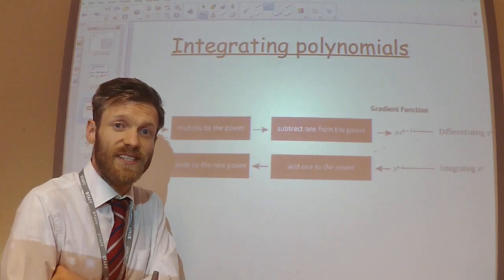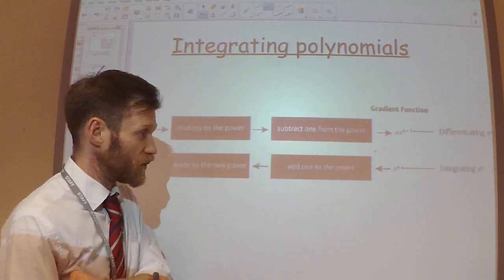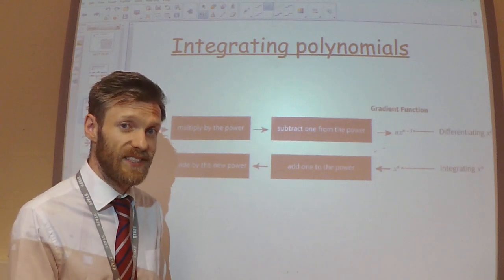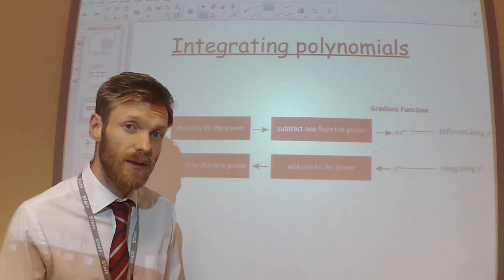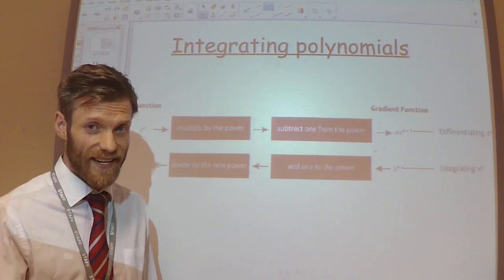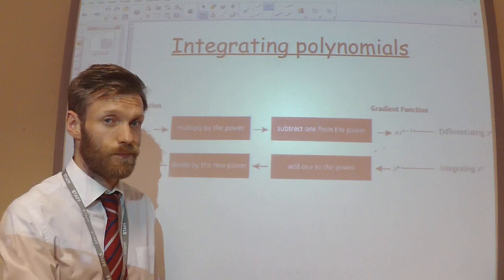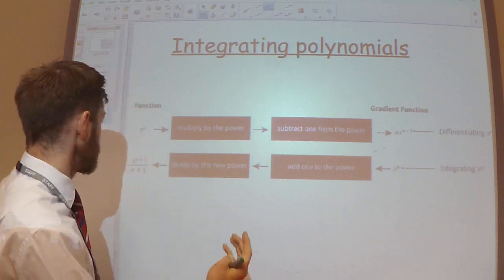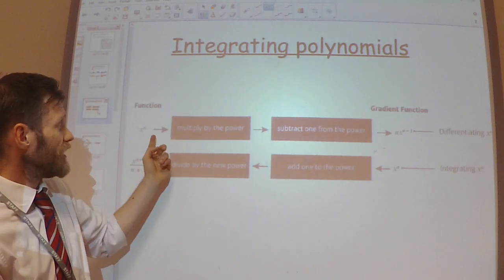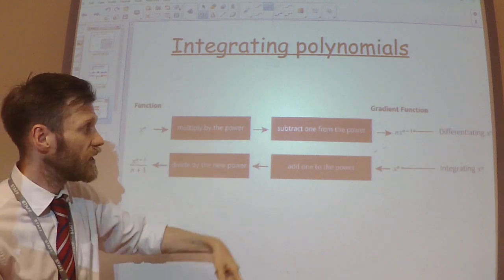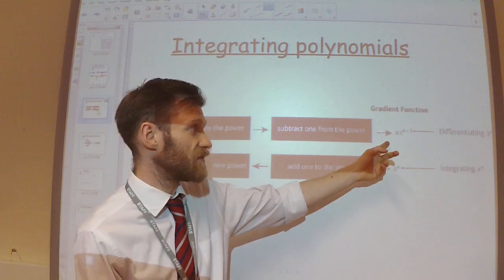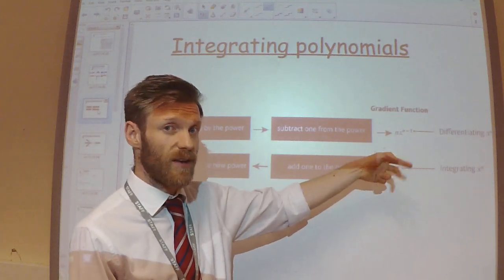So, if we're integrating polynomials, that's all you need to do for Year 12. Next year, we'll look at integrating more complicated functions, but all we need to know for now is how we integrate polynomials — as in x to the power n. Let's just remind ourselves how we differentiated: we multiply by the power, and then subtract 1 from the power. That's how we find the gradient function, how we differentiate our polynomial.